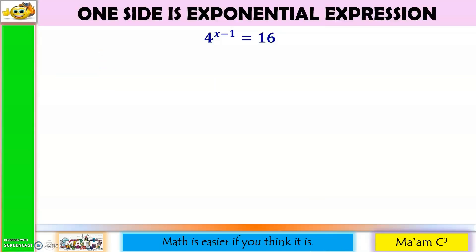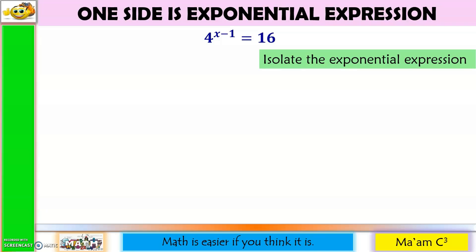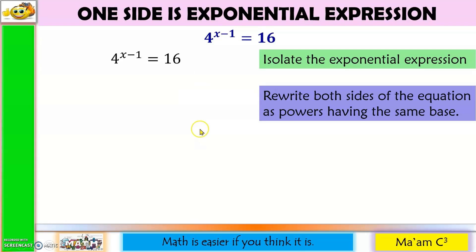Let's have another example: 4 raised to x minus 1 is equal to 16. Step 1: isolate the exponential expression. Since the exponential expression is already isolated on one side, let's just copy the equation. Step 2: rewrite both sides as powers having the same base. My base here is 4 and here is 16. I can express 16 as 4 squared, since 4 times 4 is equal to 16. So I'll copy 4 raised to x minus 1, and then I'll replace 16 with 4 squared. Now I have the same base.